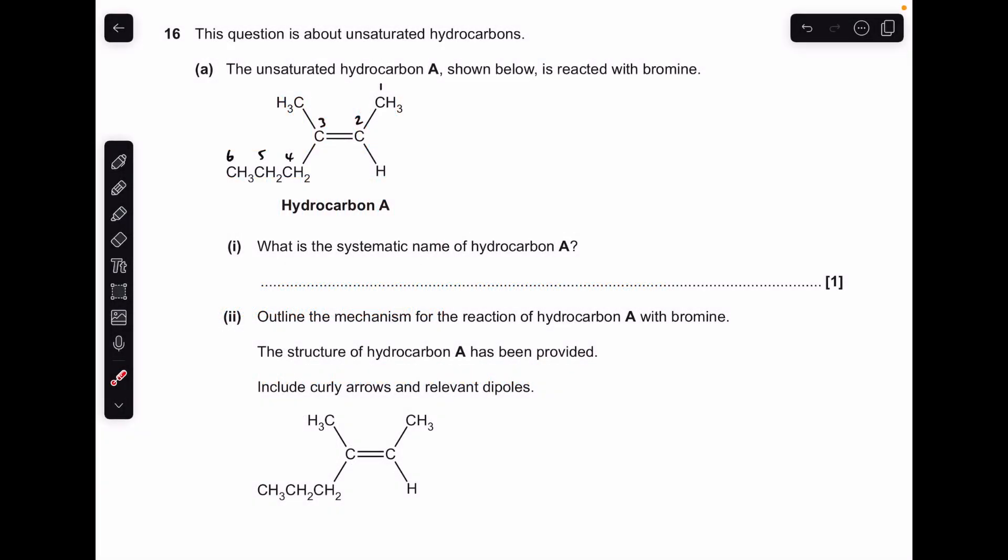Okay, so make a start. You can see I've already numbered the carbons up. The longest continuous chain is this one here, so there's six carbons in that. So this is going to be hex. The carbon-carbon double bond starts at carbon 2, so it's hex-2-ene. There's a methyl group on carbon number 3, so it's 3-methylhex-2-ene.